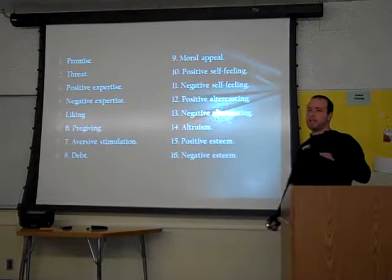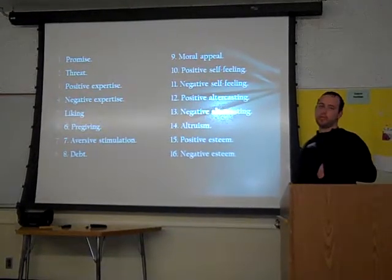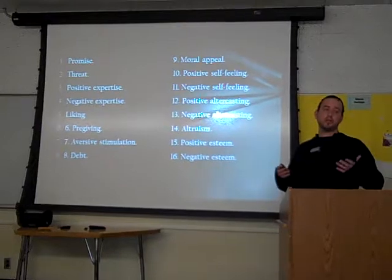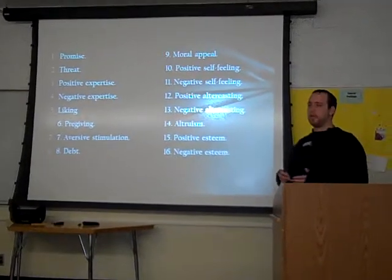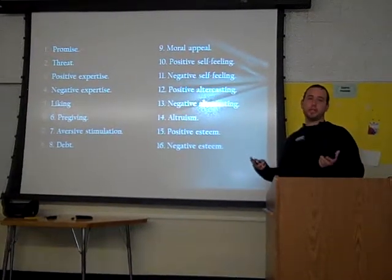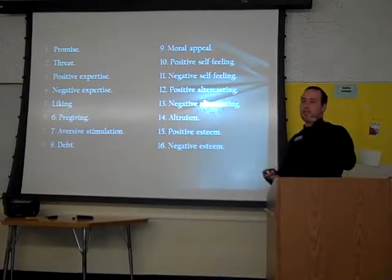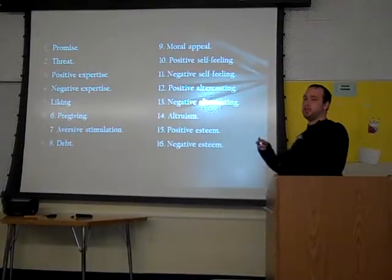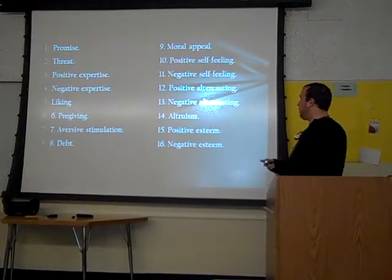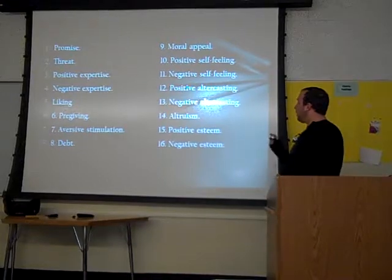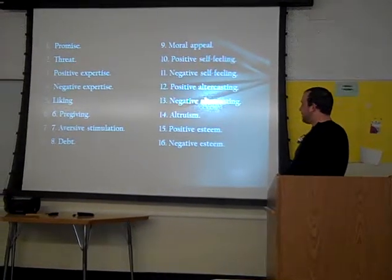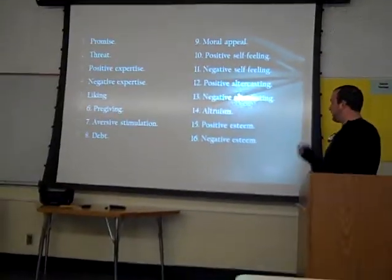Alter casting is where, if you want someone to be a certain way, you put them in a role. For example, you say 'good students do this' if you're trying to get your student to be more scholastic — you put them in that role that you want them. Fourteen is altruism. Fifteen is positive esteem. And sixteen is negative esteem.